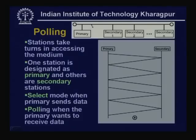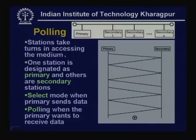Now we shall go back to the round-robin techniques. One important approach used in round-robin technique is polling, a very common technique used in many practical situations. For example, in a classroom we do roll call using polling — the teacher calls students one by one. Similarly here, stations take turns in accessing the medium. One station is termed the primary — it can be considered like a teacher or chairman — and the other stations are called secondary. There are two distinct modes.